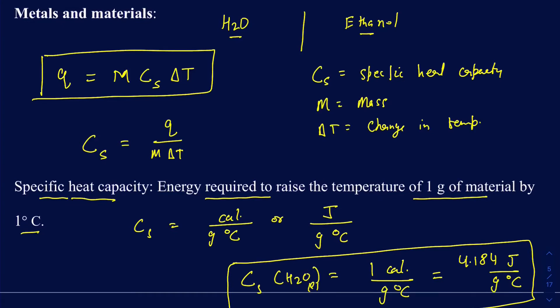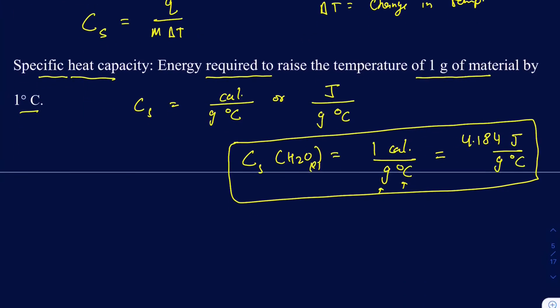Water actually has a fairly high specific heat capacity. To increase the temperature of one gram of water by one degree Celsius, you need one calorie of energy. One gram is roughly one milliliter, so if you want to increase the temperature of 70 kilograms of water, you'd need a lot of energy. That's why water acts as a buffer in our body — our body is about 70% water, and it resists changes in temperature.